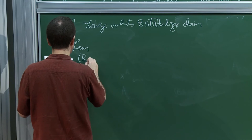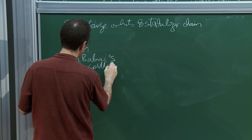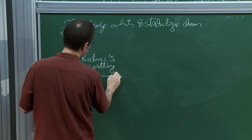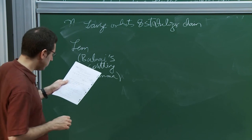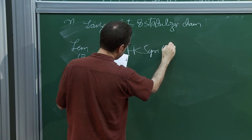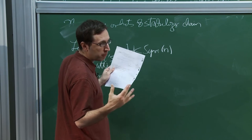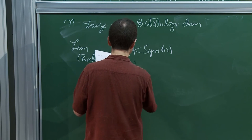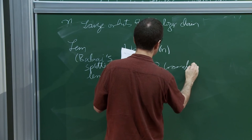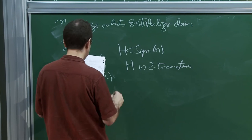This is called the Babai splitting lemma. Babai was working in the early 80s, back when it wasn't even clear whether the people doing classification believed classification was done. He was trying, with some success, to give much shorter proofs of some consequences of classification. Let's have a 2-transitive subgroup of Sym(n) — meaning a subgroup that acts transitively on pairs — and say you have some subset sigma.